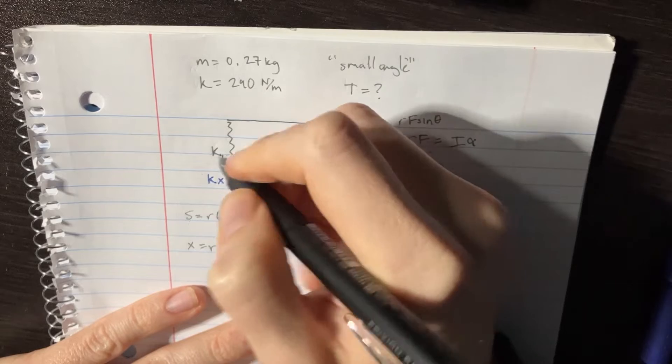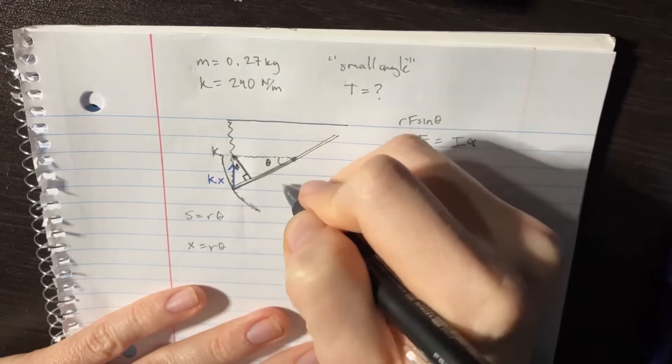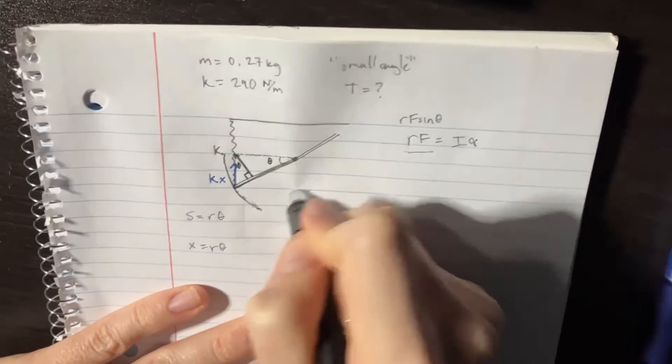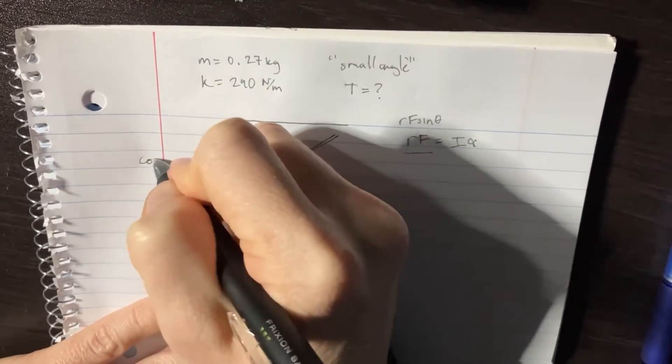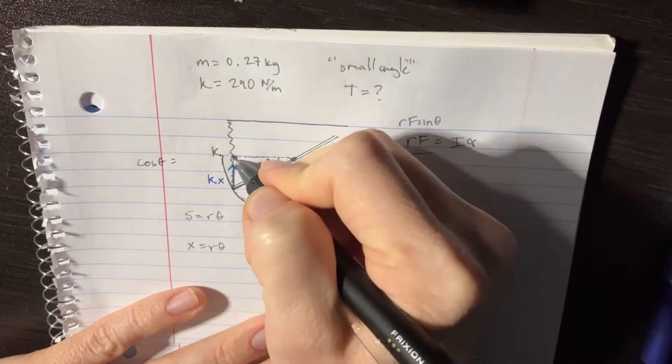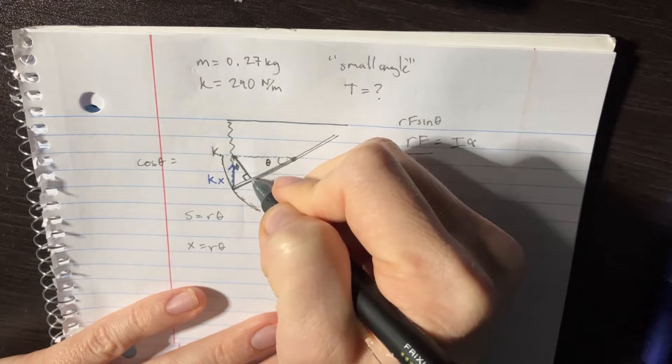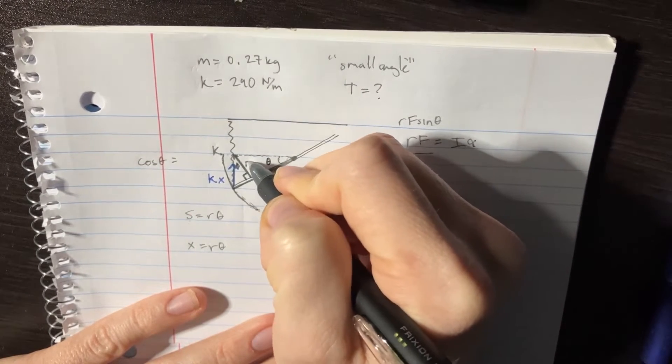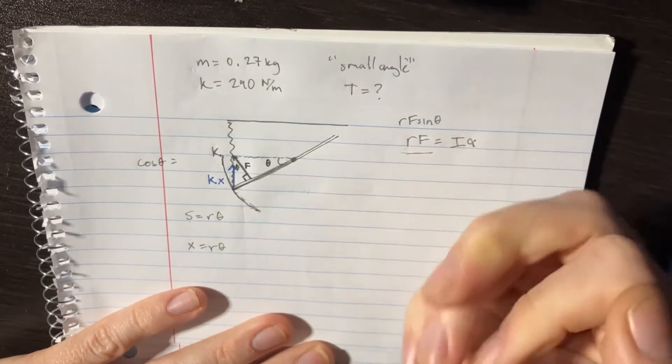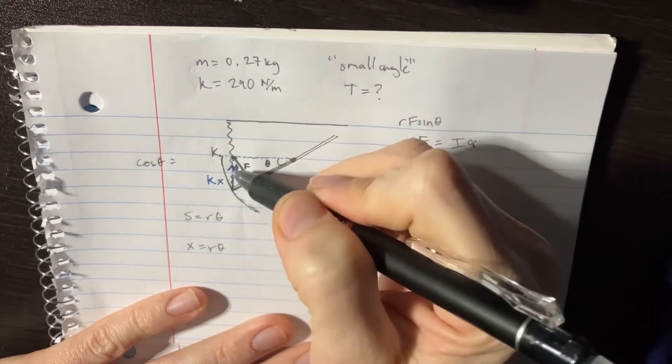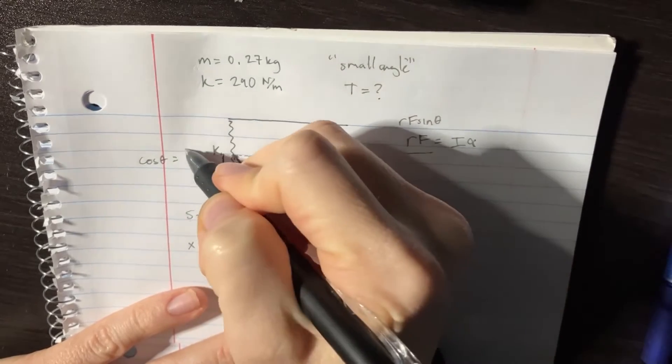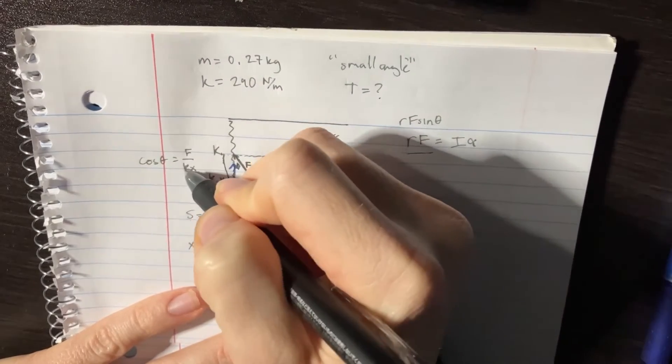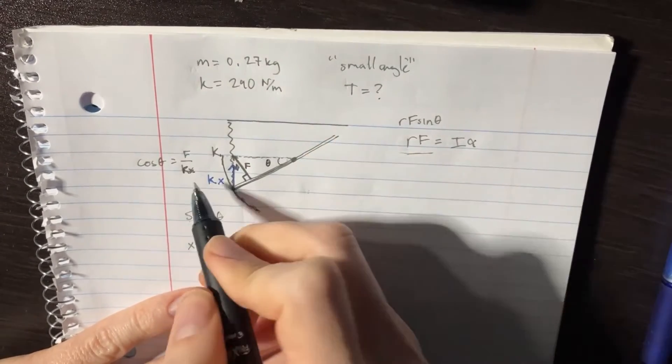Cosine of theta equals the adjacent angle, which is this one - we'll call that one F. That's really the line that we want, we want F. And we know this being KX, that's the hypotenuse. So we're just going to do adjacent over hypotenuse - it's going to be F over KX. Then we can move that to the other side so that we get F is equal to KX cosine theta.